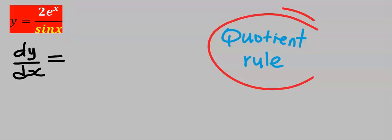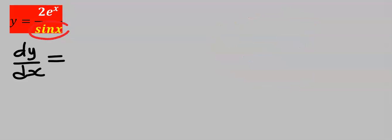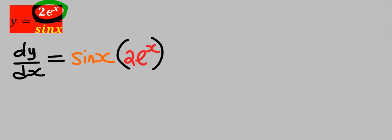Step one is to leave the denominator constant. Step two is to differentiate the numerator, and you're going to get 2e^x for this derivative. Next, we're going to keep the numerator constant, which is 2e^x.